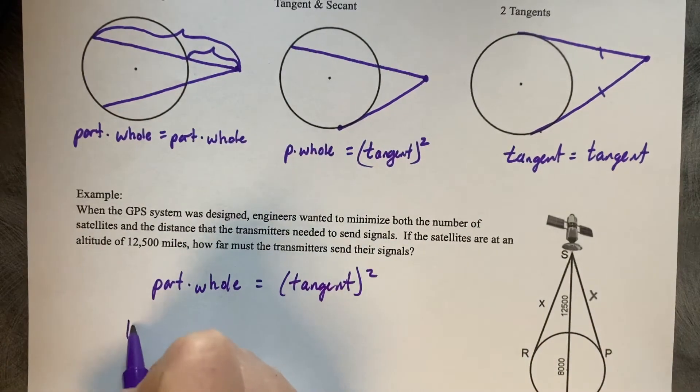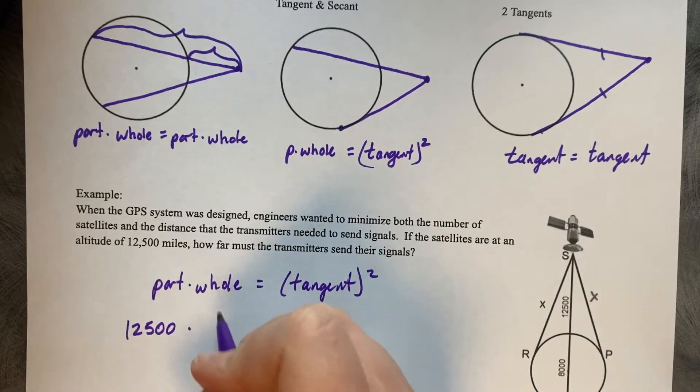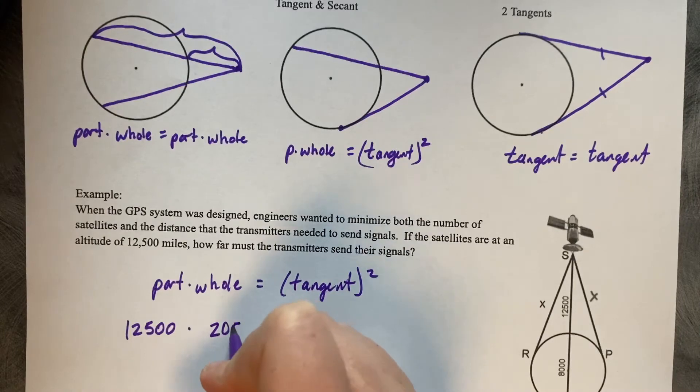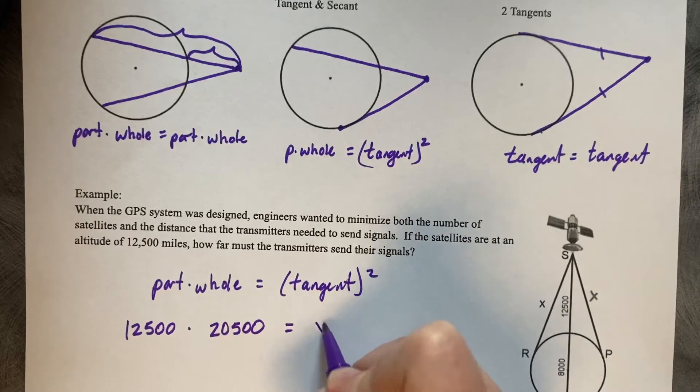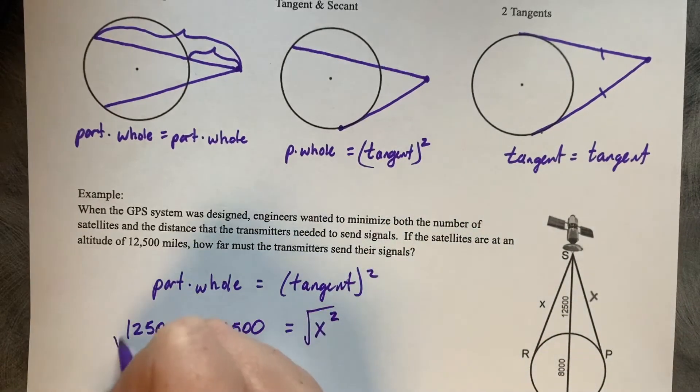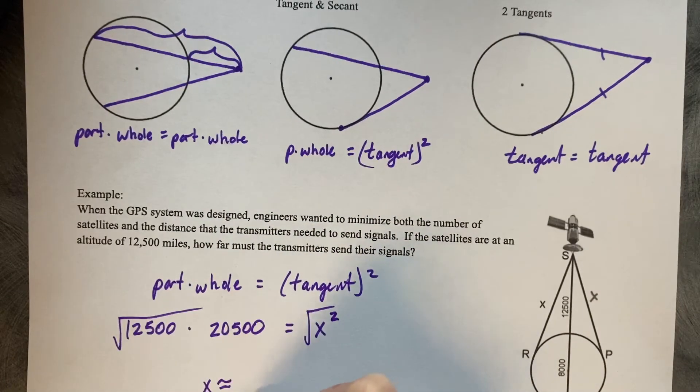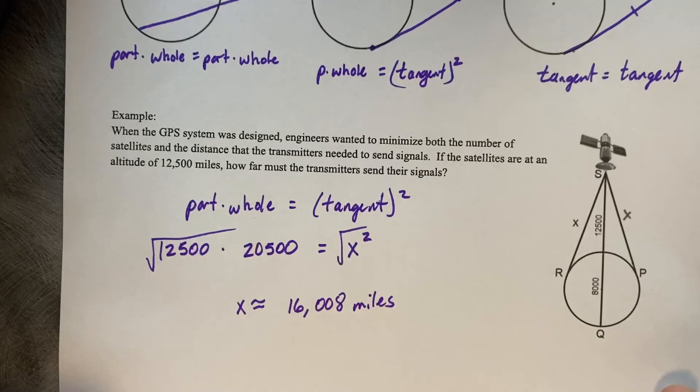So that's going to be 12,500, that's our part, times our whole, 12,500 and 8,000 is 20,500, equals our tangent squared. And that's a missing piece, so X squared. Multiply that and then take the square root and X is approximately 16,008 miles long. Sorry, you couldn't see that.